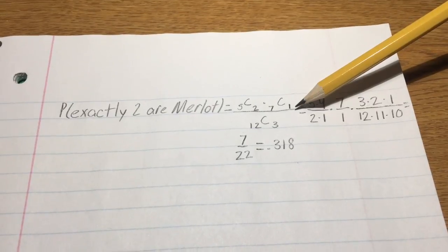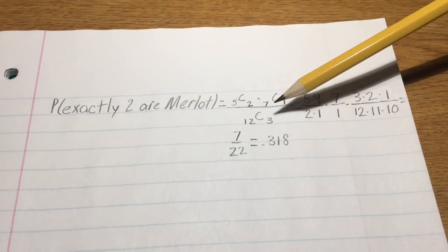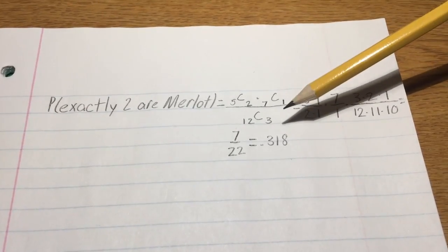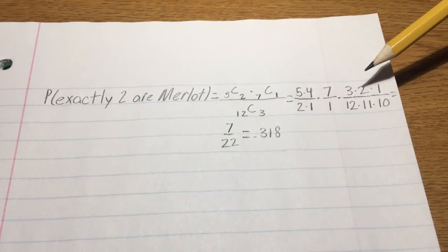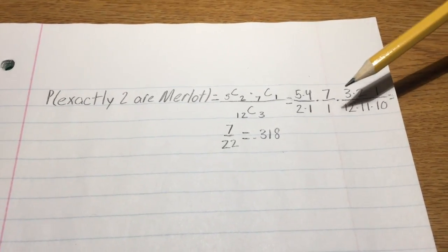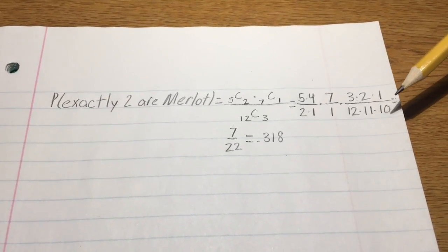Since we are working with division here, it would be the permutation of the three bottles being selected from the 12, being 3 multiplied by 2 multiplied by 1, divided by 12 multiplied by 11 multiplied by 10.